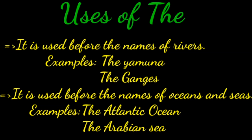Now we are going to see where we can use 'the'. First, it is used before the names of rivers — for example, the Yamuna, the Ganges. It is also used before the names of oceans and seas — for example, the Atlantic Ocean, the Arabian Sea.